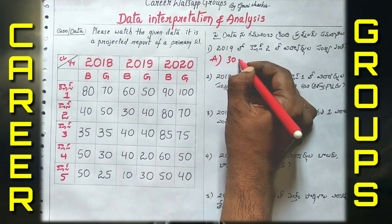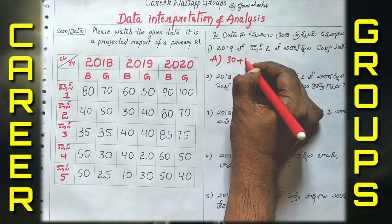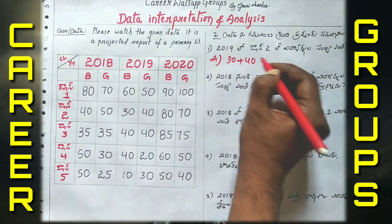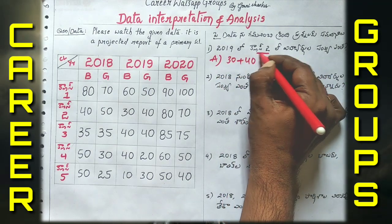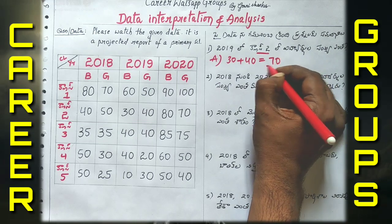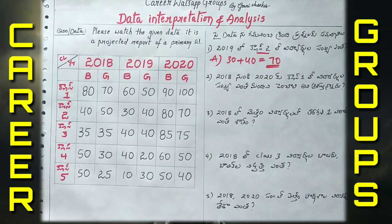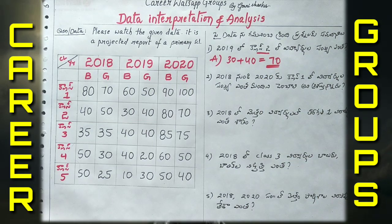Boys are all three, girls are all four. Class 2 is equal to dubby. That's all. Do you understand? It's simple. Data interpretation is not difficult — you just need to read carefully.